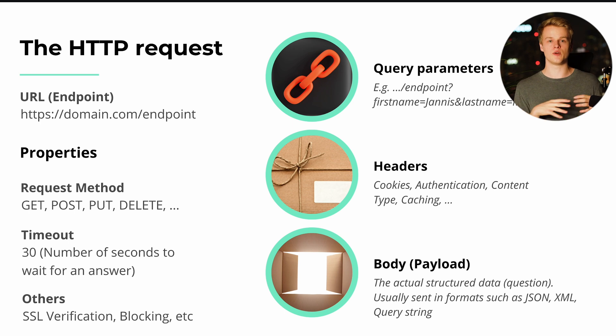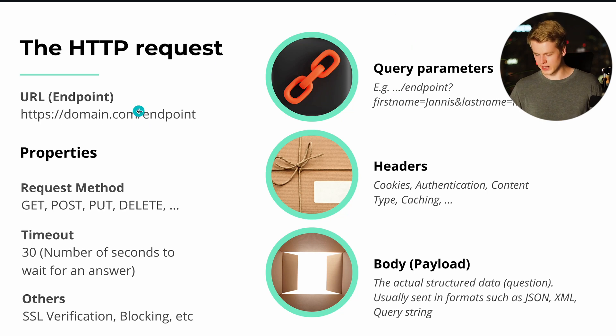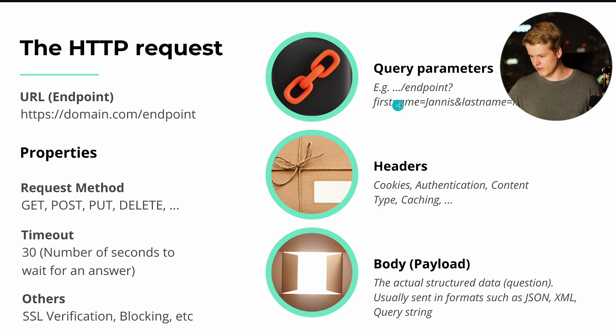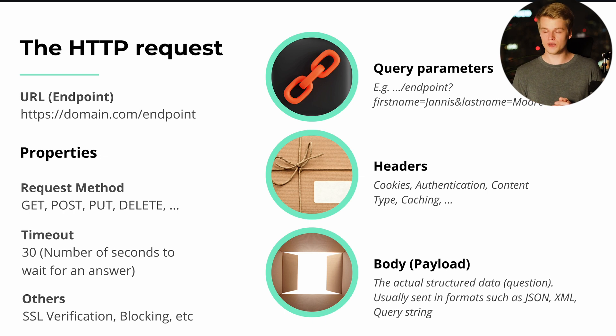Coming to the request itself, there are three main points. First: query parameters — additional information or context sent along within the URL that is usually not sensitive. As you can see in the presentation, the URL is followed by a question mark, which signals to the server that parameters are being defined. For example: ?first_name=value&last_name=value. Some tools also send API keys within the URL, which is an insecure practice but still happens.